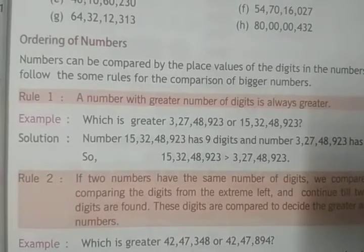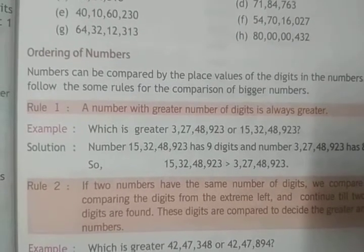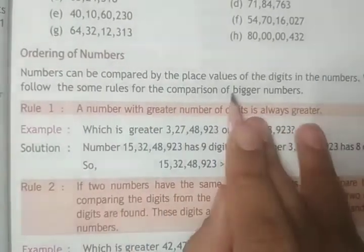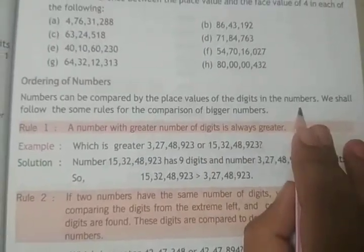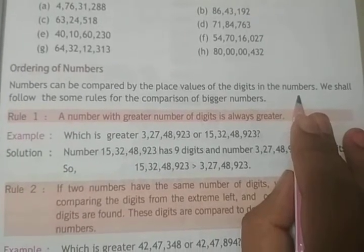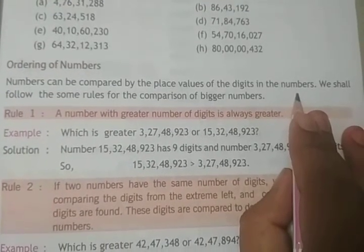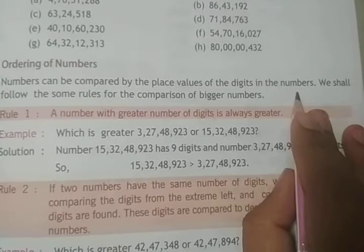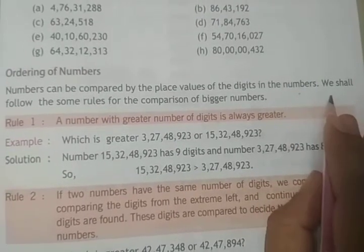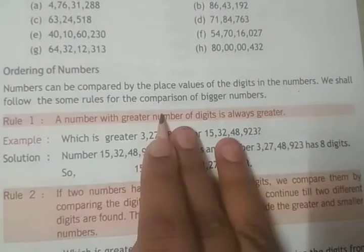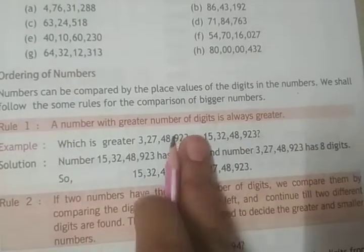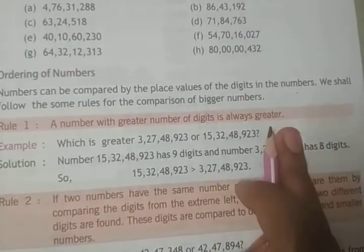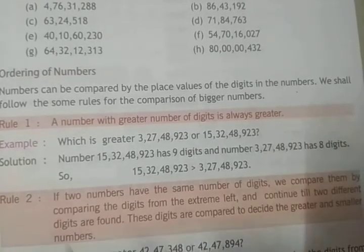Our next topic is ordering of numbers. Numbers can be compared by the place value of the digits in the number. We shall follow some rules for comparison of bigger numbers.